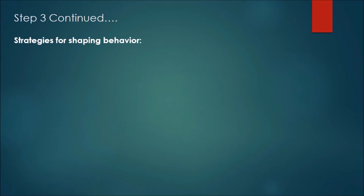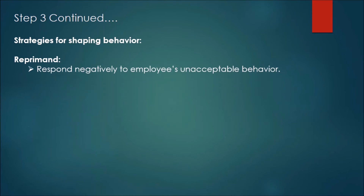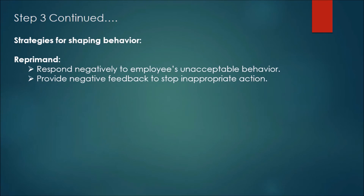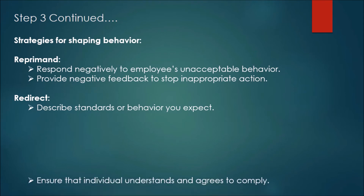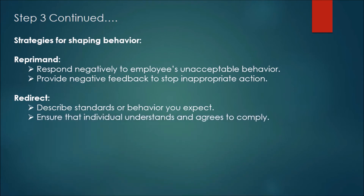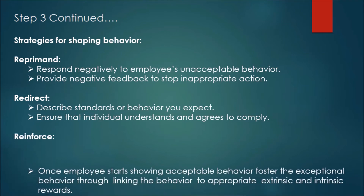Strategies for shaping behavior include three approaches: Reprimand — respond negatively to unacceptable behavior and provide negative feedback to stop inappropriate action; Redirect — describe the standards or behavior you expect and ensure the individual understands and agrees to comply; Reinforce — once the employee starts showing acceptable behavior, foster exceptional behavior by linking it to appropriate extrinsic and intrinsic rewards.